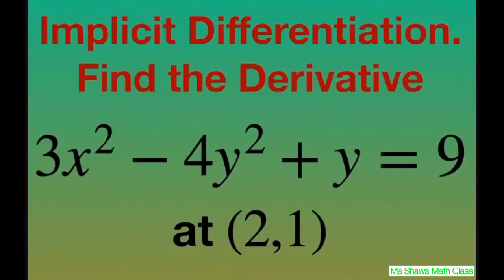Hi everyone. We're going to use implicit differentiation to find the derivative of 3x² minus 4y² plus y equals 9 at (2, 1).